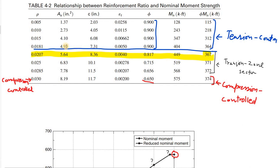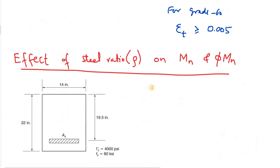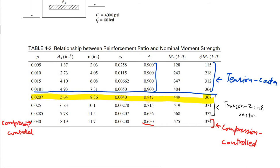So the first cross-section in this list is the fourth cross-section. It has lesser A_s compared to the second cross-section and has an epsilon_t of 0.005, where the second cross-section has epsilon_t of 0.004. Phi for this fourth one is 0.9 since it's a tension-controlled section, and for the second one, the phi value is between 0.65 and 0.9. It's a transition zone section and phi is based on the interpolation formula, so it has a lesser phi value of 0.817.